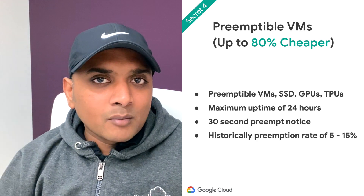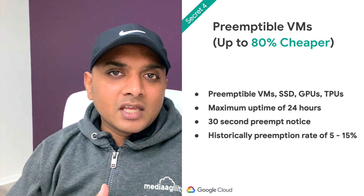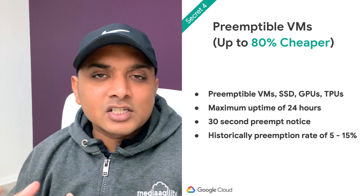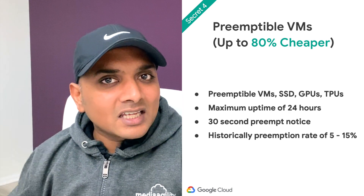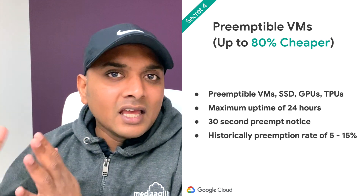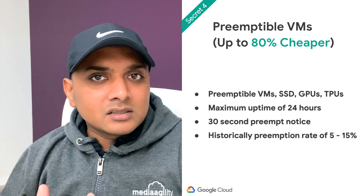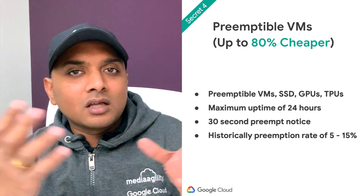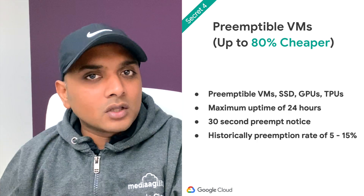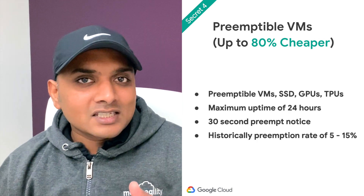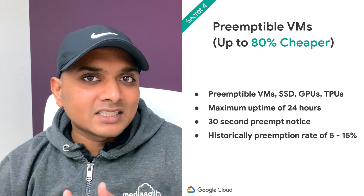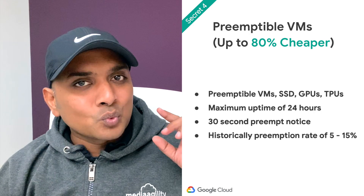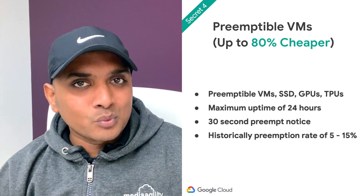Some use cases where companies have leveraged preemptible VMs include batch jobs that can easily be restarted with minimal impact — if the first iteration dies, you can restart and finish on time. Another scenario is where you can transfer your workload to another instance when Google gives you the 30-second warning. Some people I work with have saved 60, 70, or even 80% of their cloud consumption by leveraging just this one secret. Definitely check this out.